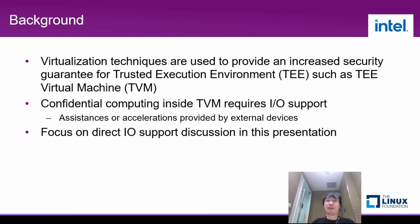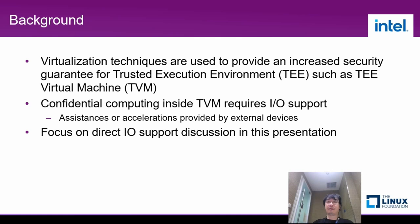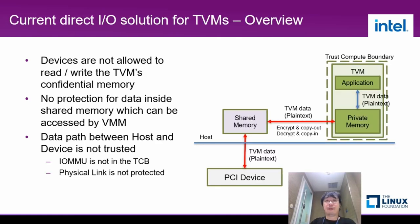Background. Virtualization technologies are used to provide an increased security guarantee for trusted execution environment, TEE, such as TE virtual machines. From TE virtual machine point of view, the VMM is not trusted. Confidential computing inside the TVM requires IO support, for example, assistance or accelerations provided by external devices. Today's presentation will only focus on direct IO support discussion. From this page, we will start to talk about the current direct IO solution for TVMs.